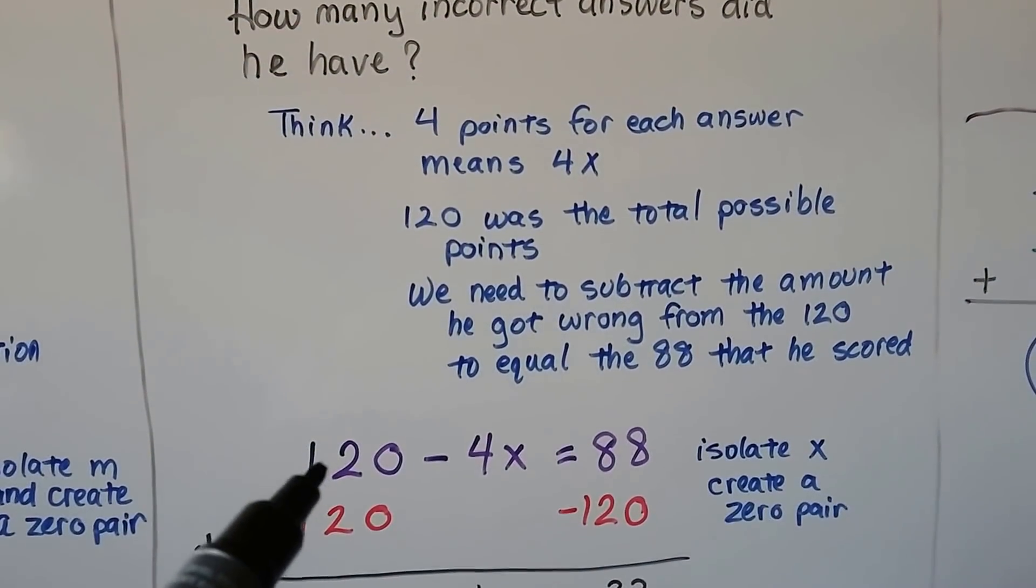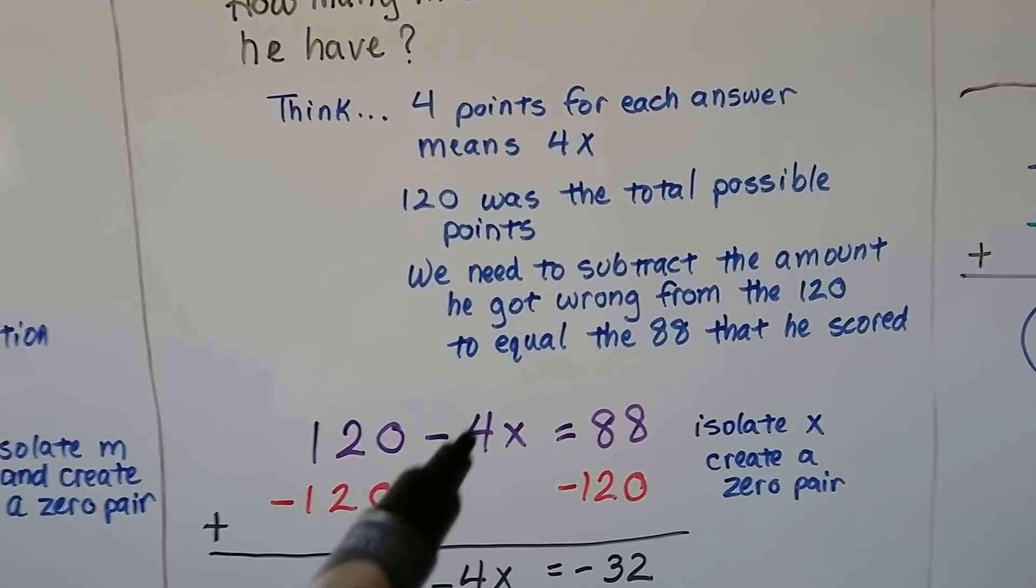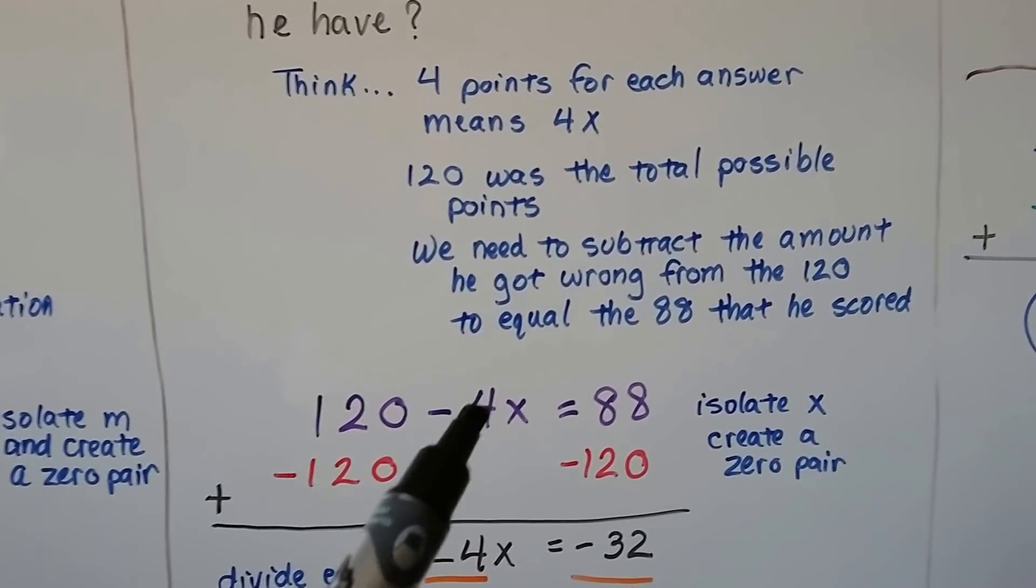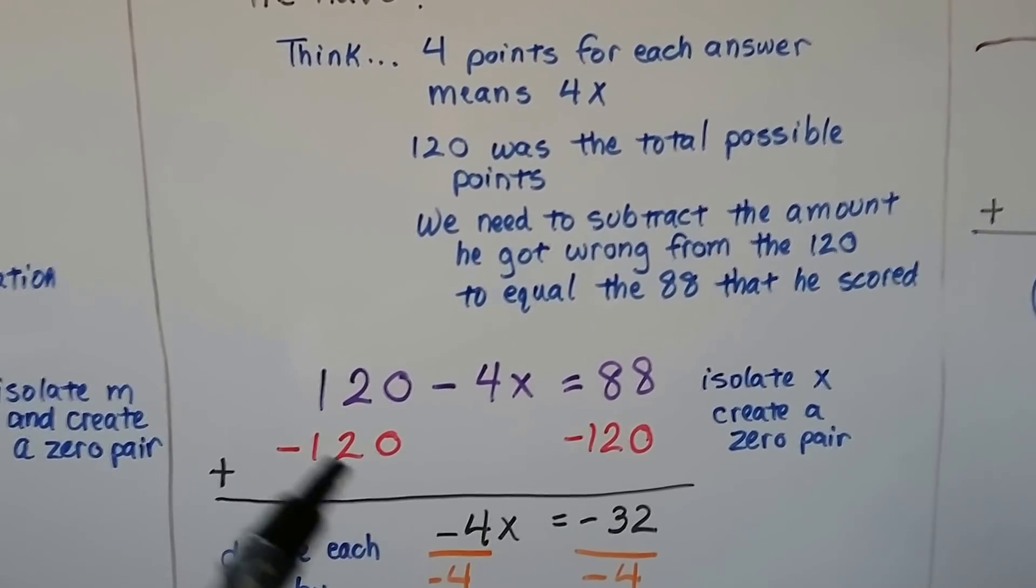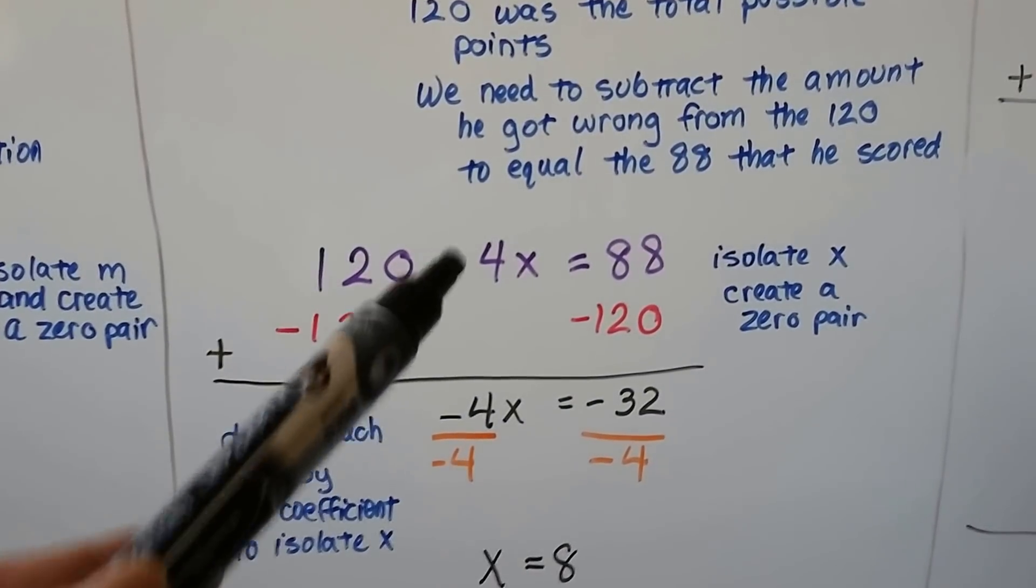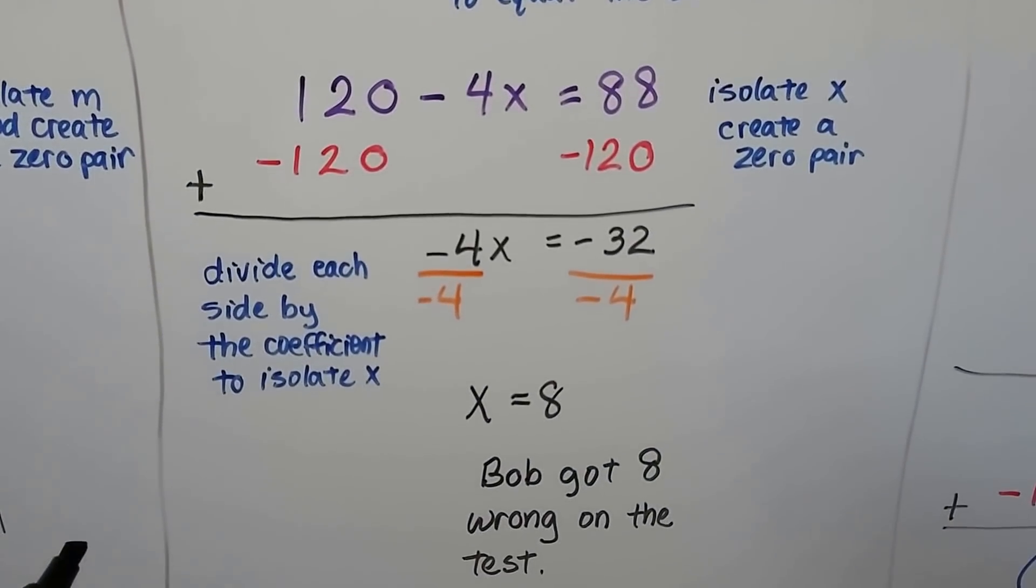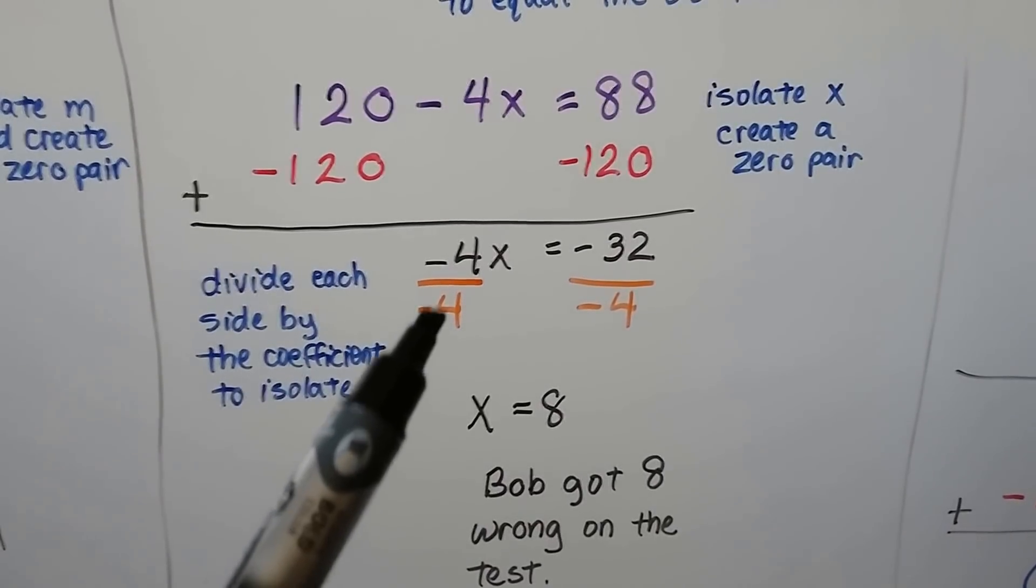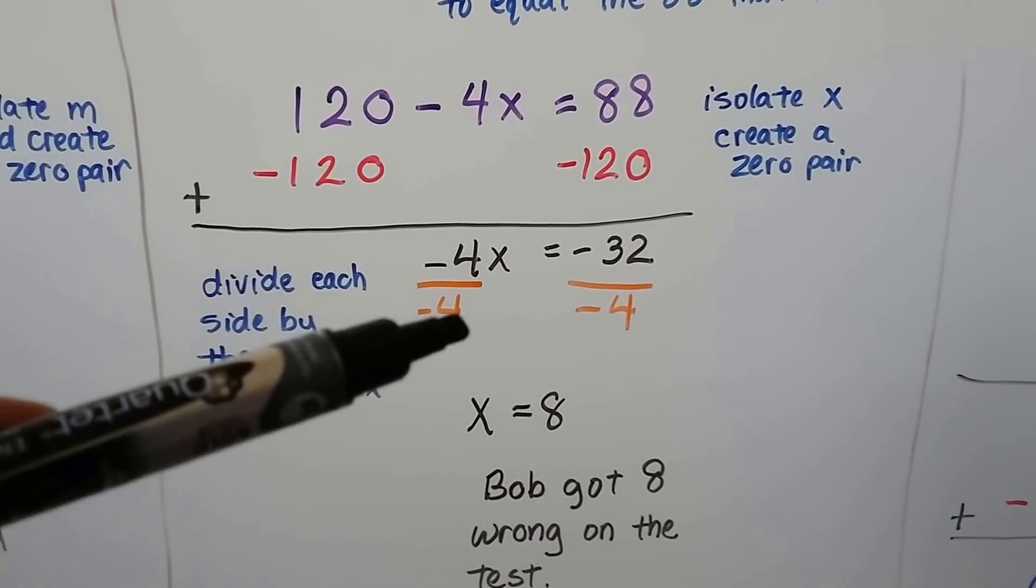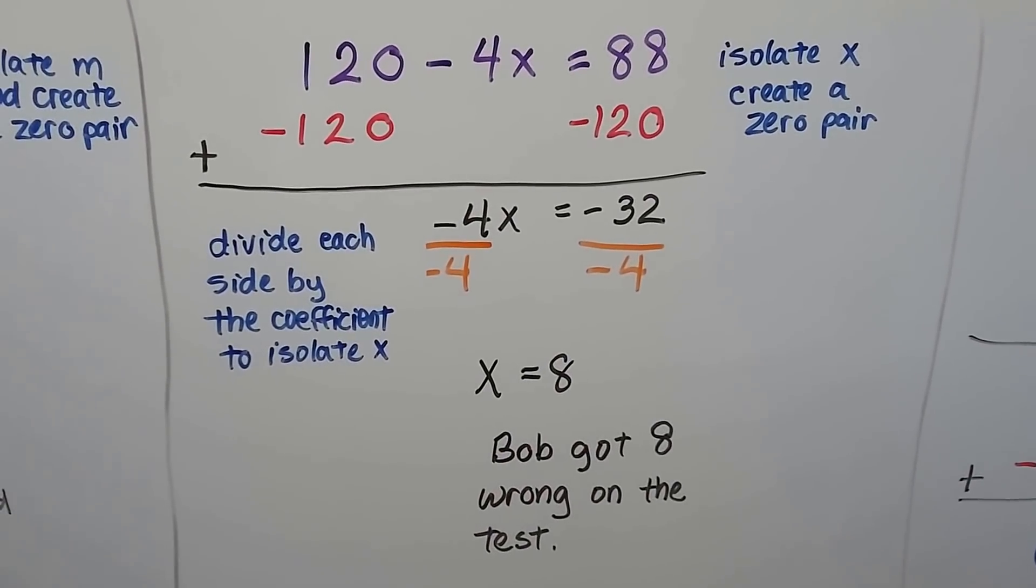Our equation is 120 minus 4x equals 88. We're going to isolate this x by creating a zero pair. We add a negative 120 to both sides of the equation. We're left with negative 4x equals a negative 32. We divide each side by the coefficient to isolate the x. Negative 4 is the coefficient. We divide both sides by negative 4. We have 1x equals a positive 8. So, we got 8 wrong on the test.